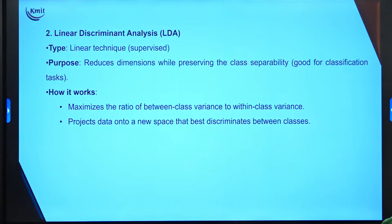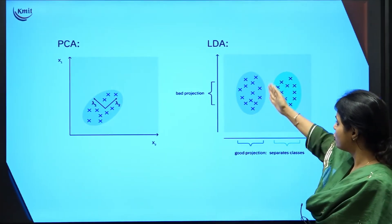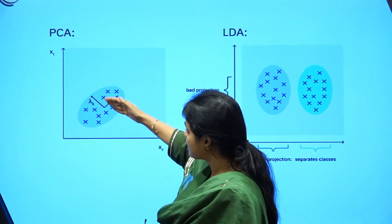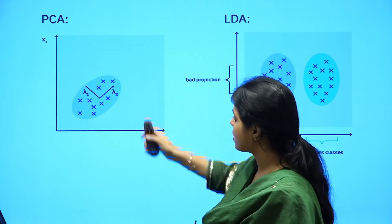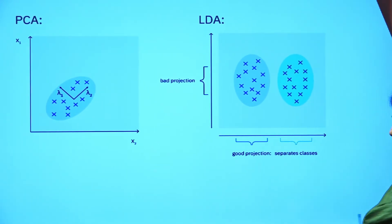Linear Discriminant Analysis (LDA) is also a linear technique. It reduces dimensions while preserving class separability, so we use LDA for classification tasks. LDA works by maximizing the ratio of between-class variance to within-class variance, projecting data onto a new space that best discriminates between all available classes. As you can see, LDA gives good separation between two different classes, whereas PCA finds Eigenvalues and Eigenvectors to differentiate between data points within a class.